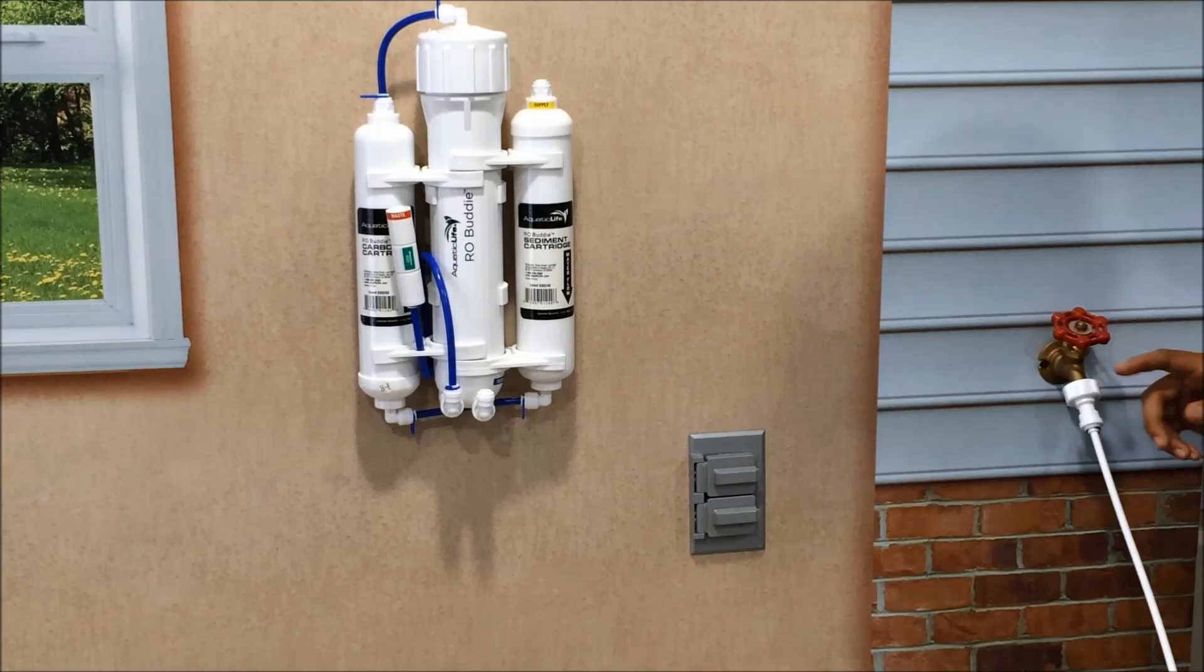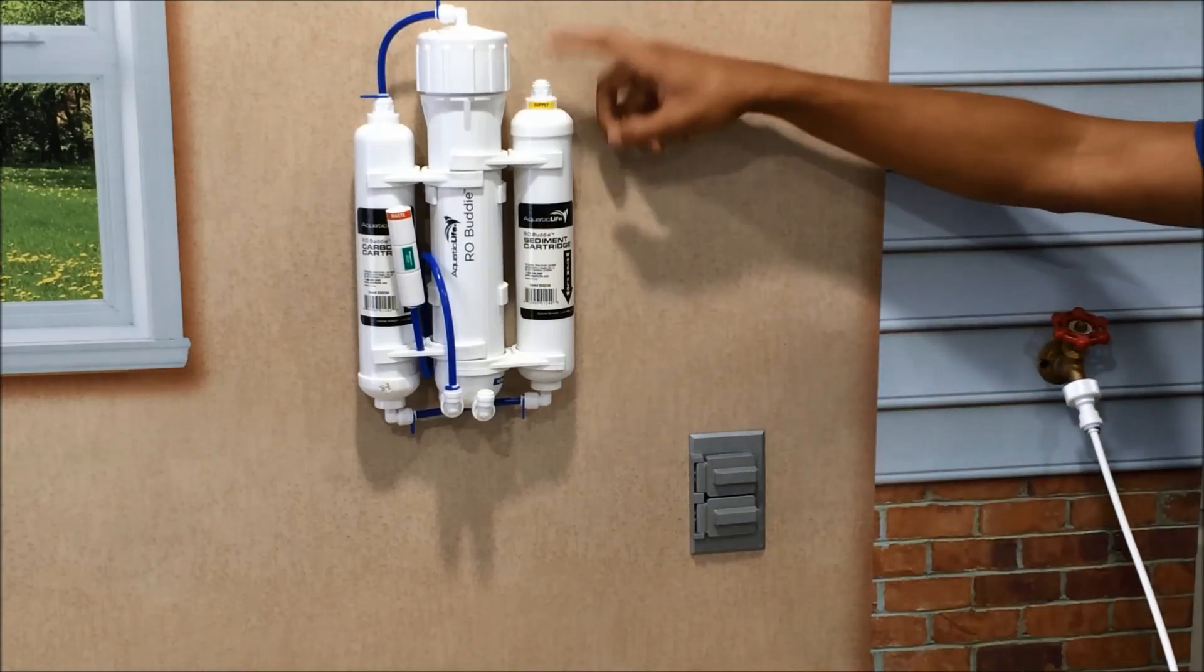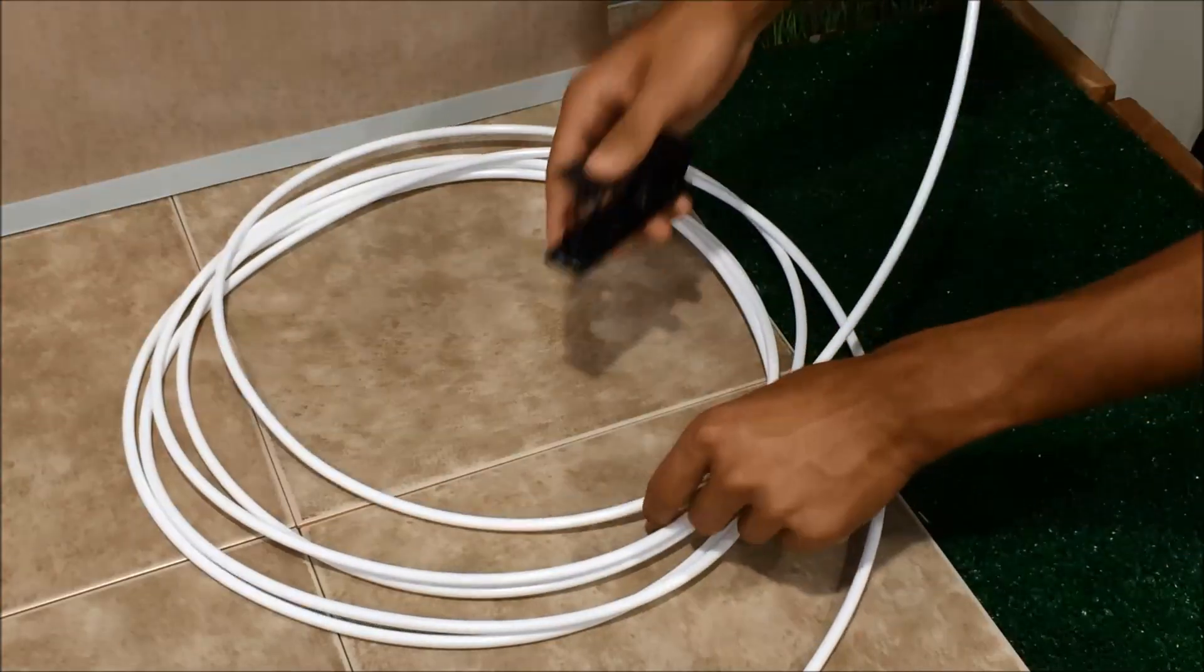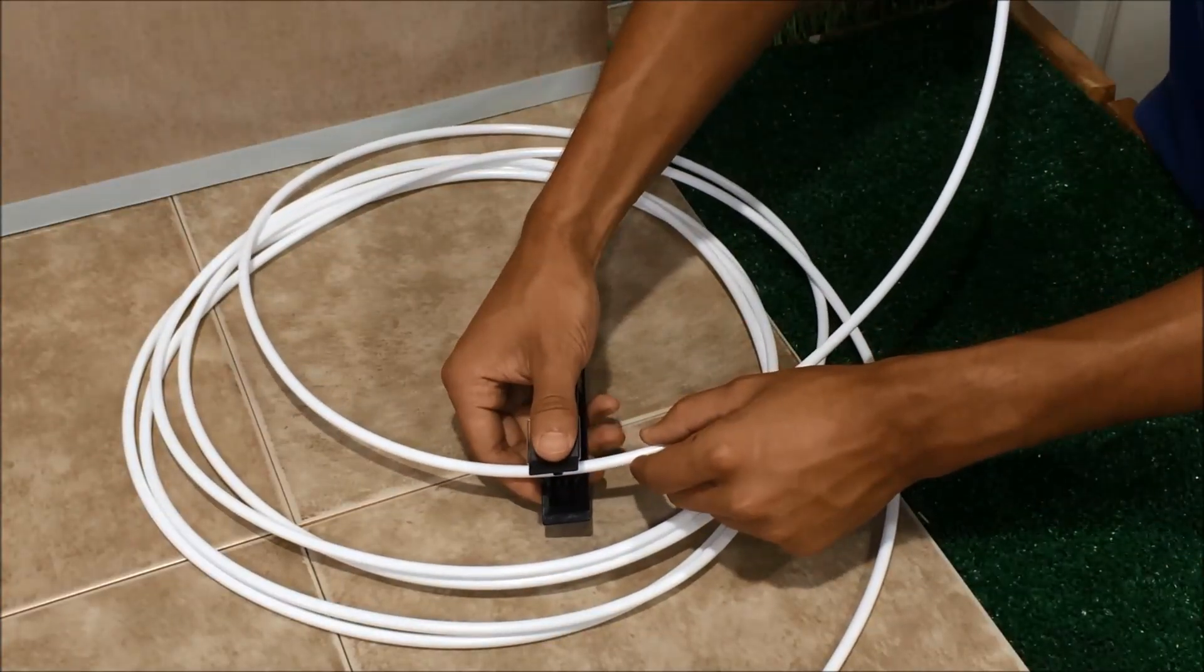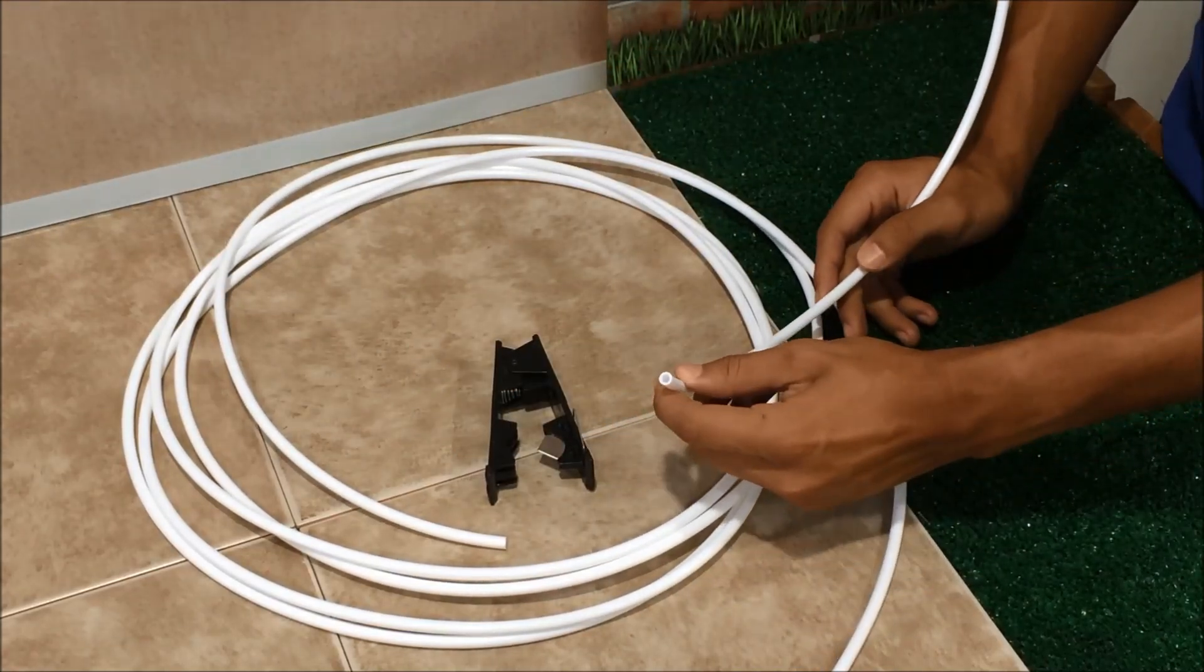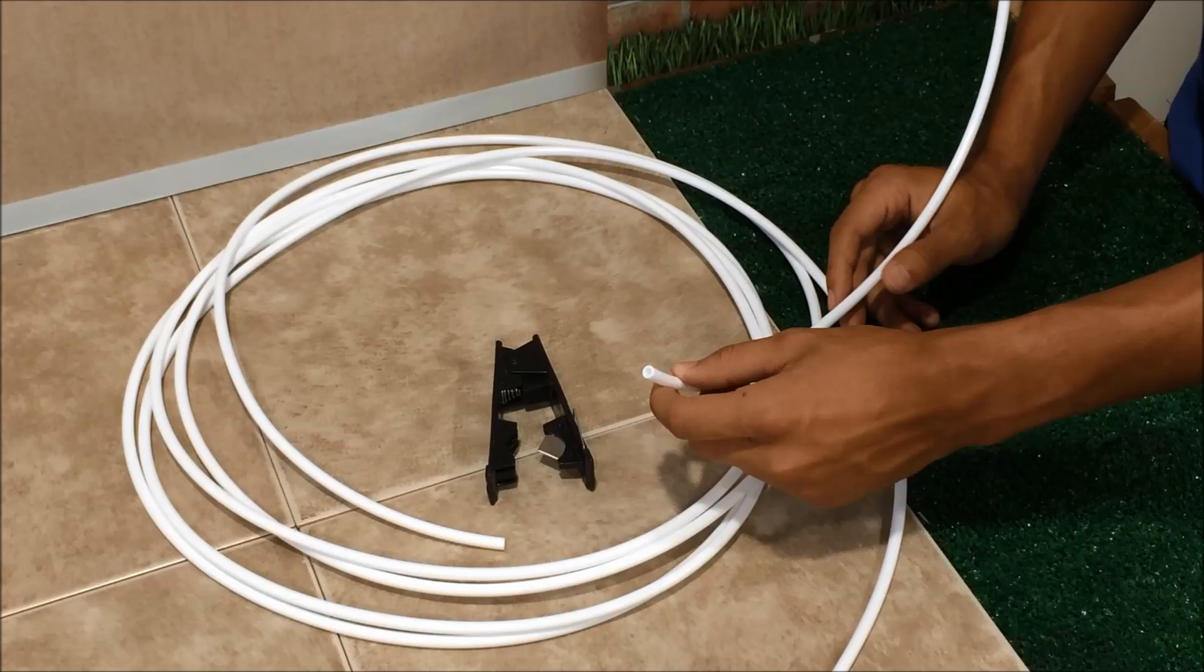You'll want to measure the distance between your faucet adapter and the sediment cartridge with your tubing, and then you'll go ahead and cut that accordingly. You'll want to use a straight edge blade versus scissors, because scissors will cause the tubing to crimp and you won't get a good seal, causing leakage.